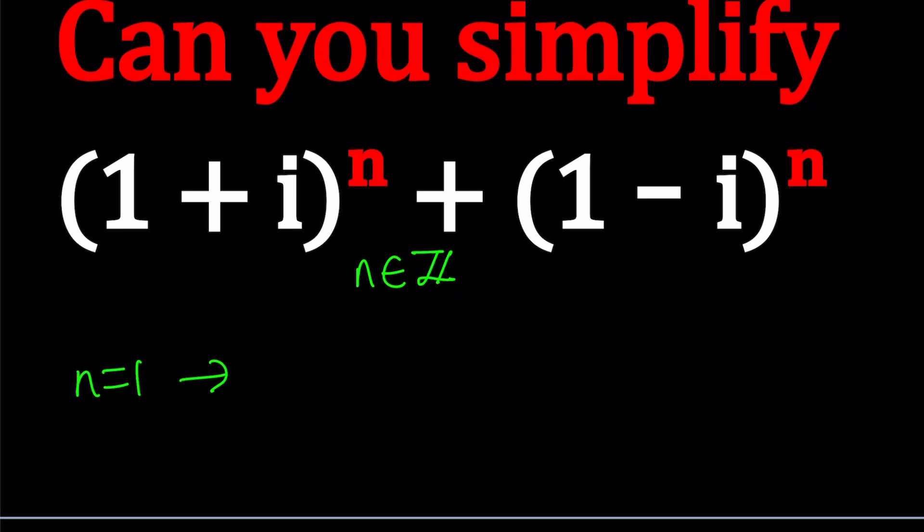So, if n is equal to 1, for example, you're going to get 1 plus i to the first power, plus 1 minus i to the first power, which means you're going to add them, and you're going to get a 2. Easy, right? I cancels out. Okay, that wasn't too hard.